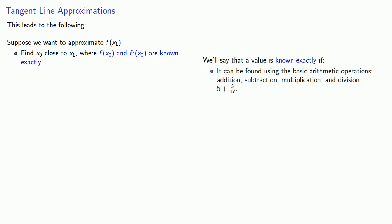This leads to the following idea. Suppose I want to approximate a function value. What I want to do is find an x0 close to my x1 where both the function and the derivative are known exactly. For our purposes, we'll say that a value is known exactly if it can be found using the basic arithmetic operations: addition, subtraction, multiplication, and division. For example, 5 plus 3 over 17.